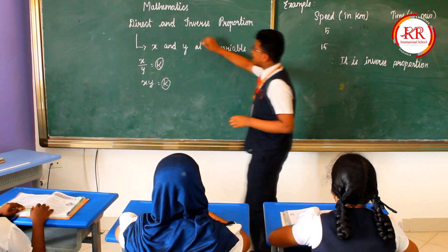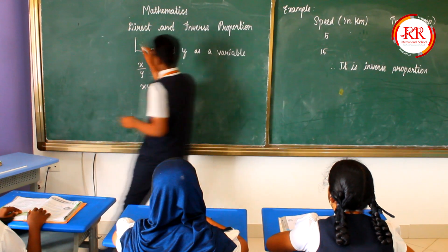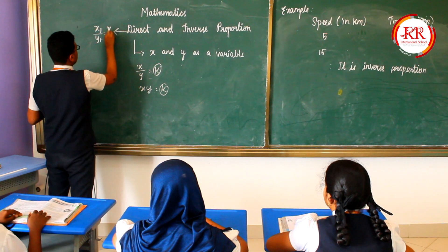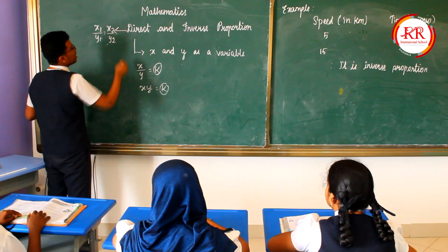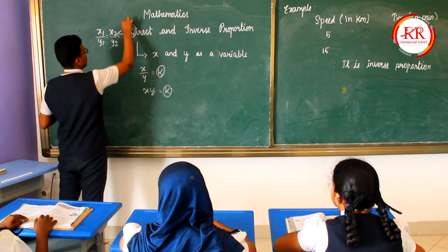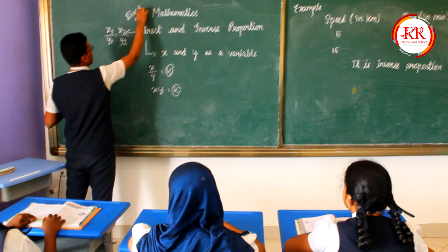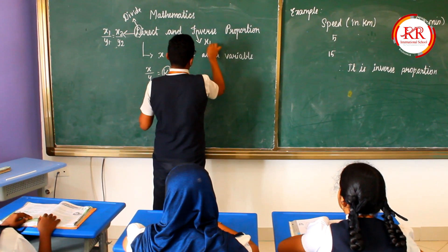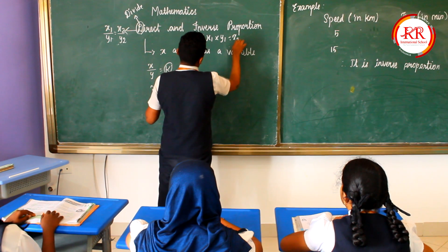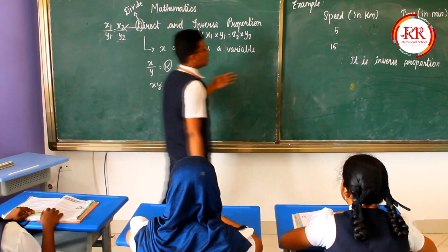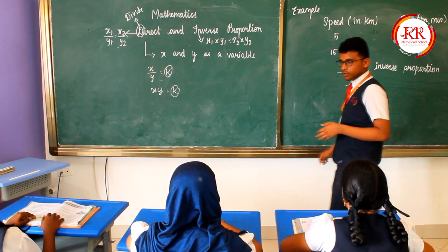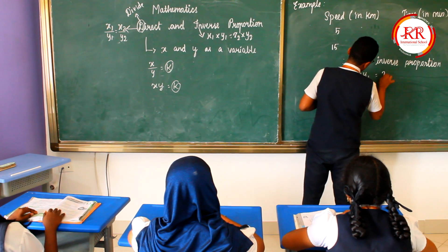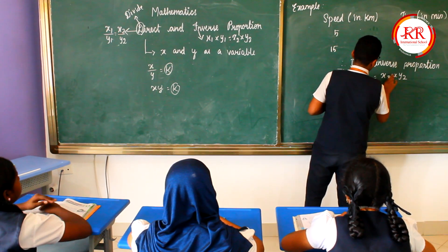Now, for direct proportion, the formula is x1 divided by y1 is equal to x2 divided by y2. You can remember this as 'D' for division. For inverse proportion, the formula is x1 into y1 is equal to x2 into y2. We now proceed to apply the inverse proportion formula.